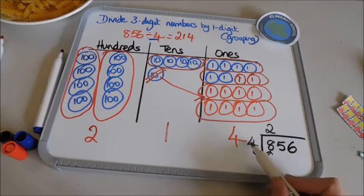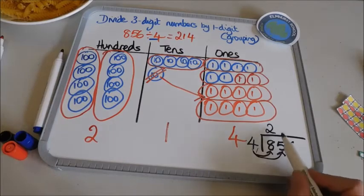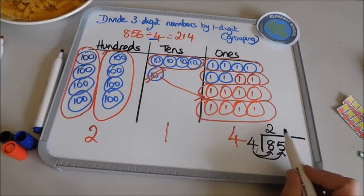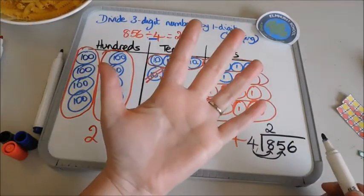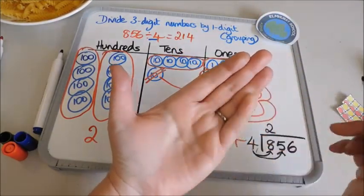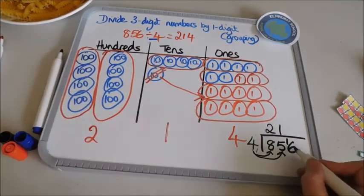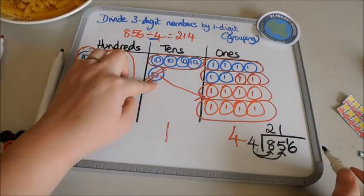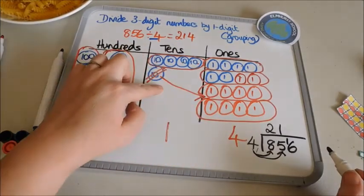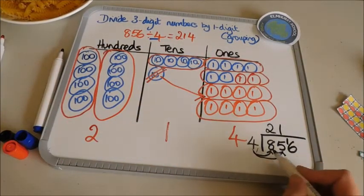Two. How many fours in five? And I know it's ten. This is my tens column. So I've got five. How many groups of four can I make? One group of four. And I've got one left over. So I need to exchange that. So it is like bringing that ten over into the ones. Bringing that left over ten into the ones.